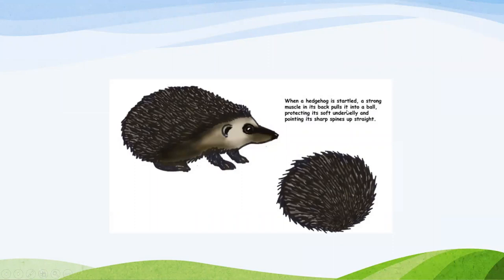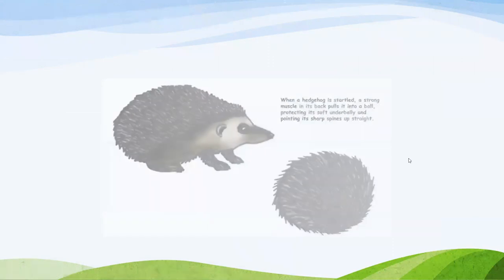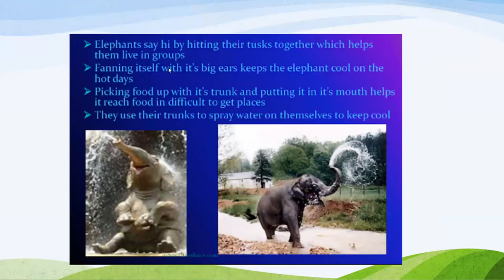When a hedgehog is startled, a strong muscle in its back pulls it into a ball, protecting its soft underbelly and pointing its spines straight up. Nobody would think there is an animal inside — they would think it is just a ball of spines. Similarly, elephants wave hello. These are types of adaptations that have been developed in animals and organisms after years, decades, and generations.